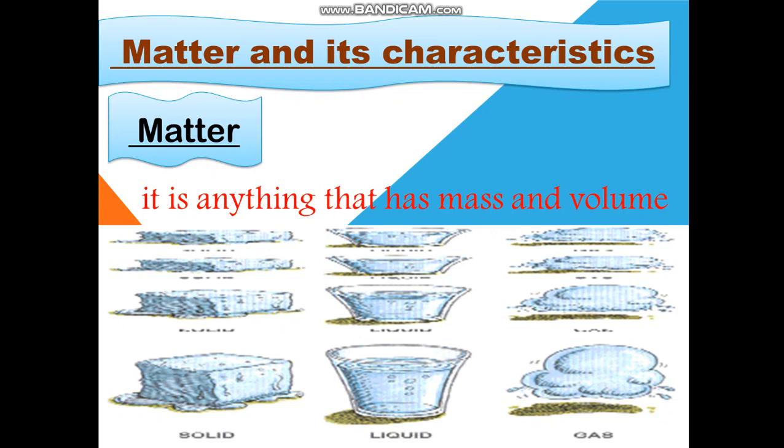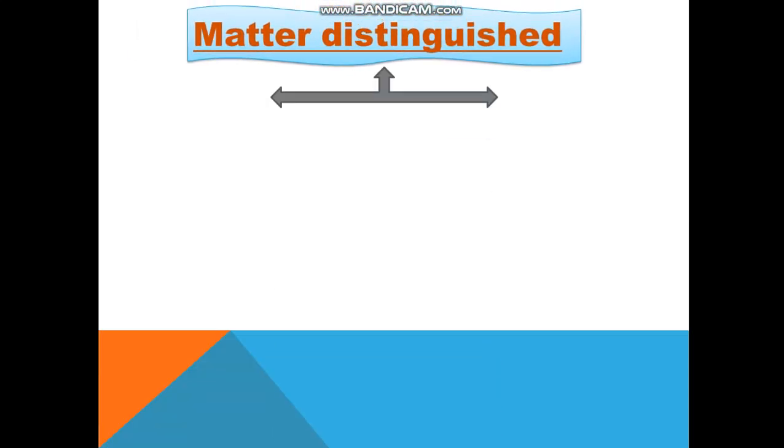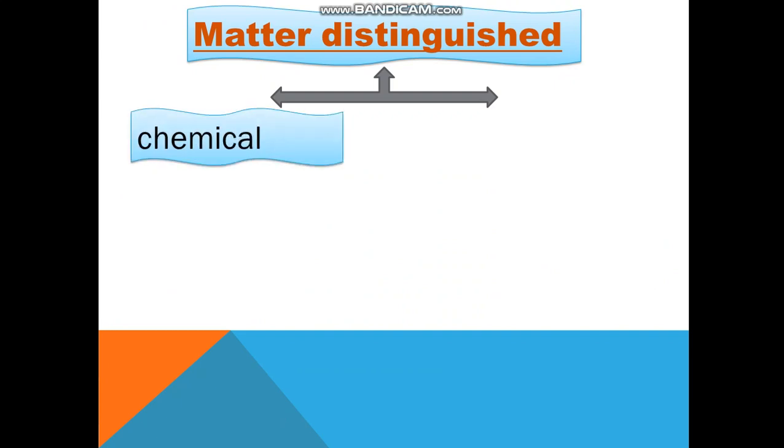Characteristics يعني صفات المادة. So our lesson today is talking about matter and its characteristics, يعني الصفات المادة بتاعتنا. Matter distinguished. We can differ between matter by chemical and physical properties. يعني إحنا نقدر نفرق ما بين المادة عن طريق حاجتين physical property and chemical property.